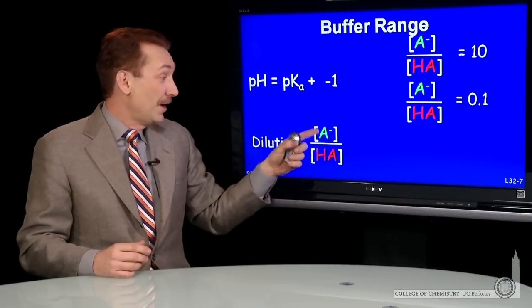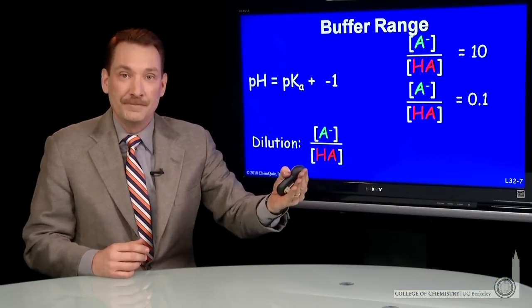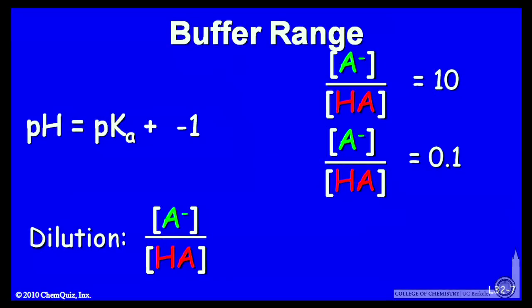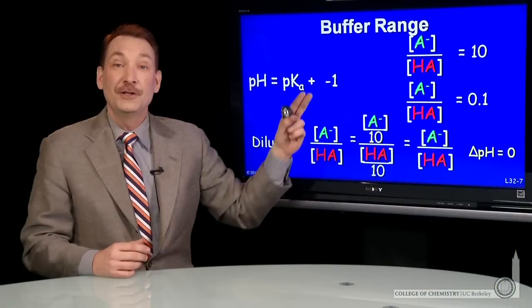It's interesting to know for these buffers, when you dilute them, the ratio A minus over HA doesn't change. If both are diluted by a factor of 10, the ratio is the same. So there's no change in pH for dilution of a buffer.